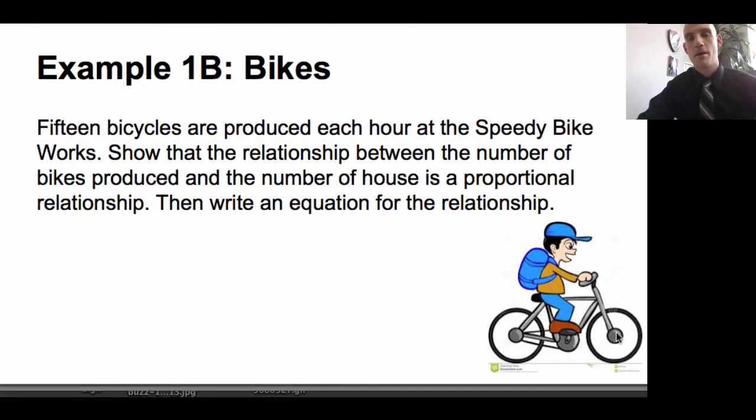Here's an example for you on bikes. Fifteen bicycles are produced each hour at the speedy bike works. Show that the relationship between the number of bikes produced and the number of hours is a proportional relationship, then write an equation for the relationship. See if you can do that one and I'll see you next time.